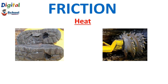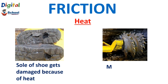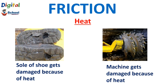Let's take another example of machines. In machines, ball bearings and screws also get worn out because the heat generated by friction wastes energy. As a result, the efficiency of the machine is also reduced. So friction causes damage to the sole of shoes and to machine parts, and decreases the efficiency of things overall.